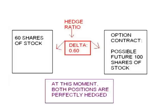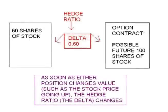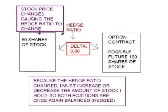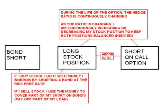The moment the stock changes in price, one position increases in value the same amount the other position decreases in value, and the total combined value does not change. Once the stock price moves even the slightest amount, the hedge ratio changes — the ratio of shares to option contracts I must hold so the positions remain hedged shifts slightly. I must slightly increase or decrease the stock I hold to restore the ratio. If I need more stock, I borrow at the risk-free rate by shorting a bond; if I need less, I sell stock and use the proceeds to cover part of my bond shorts. This is known as dynamic rebalancing.